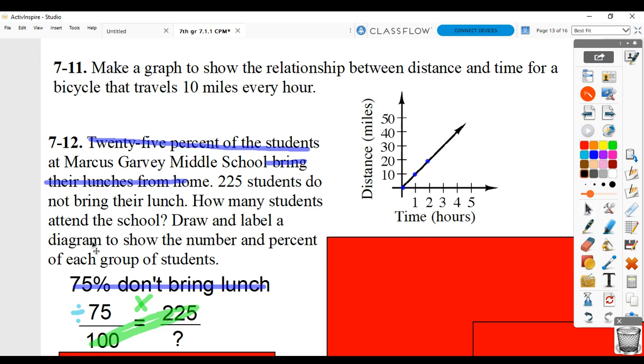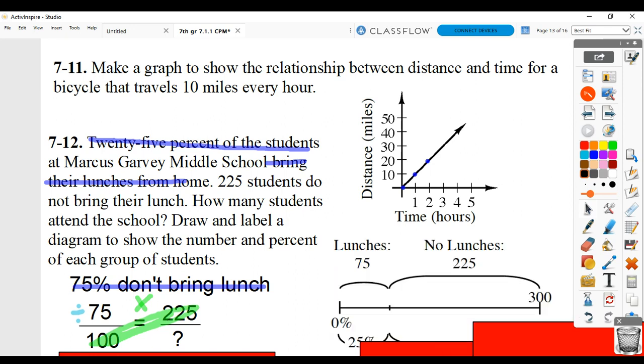They also talk about having you create a diagram. If you're going to make a diagram, you'd be looking at something like this where 225 students are representing 75%. We're figuring out the total number of students. 100% of the school is representing 300 students. We said the answer is 300. That means that 25% would be 75 students who do bring their lunches. So the diagram would look something like that.